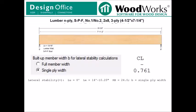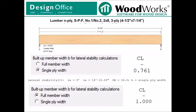Let's look at an example. An 8-foot long 3-ply 2x8 built-up beam consisting of number 1 and number 2 SPF. If you were to calculate CL based on a single ply, the resulting CL would be 0.761. The information related to the lateral stability calculations will automatically be reported for you in the design results. Although, if you were to utilize the full width of the member for calculating lateral stability, the CL would result as 1. So using the single ply as opposed to the full width of the member is slightly conservative.